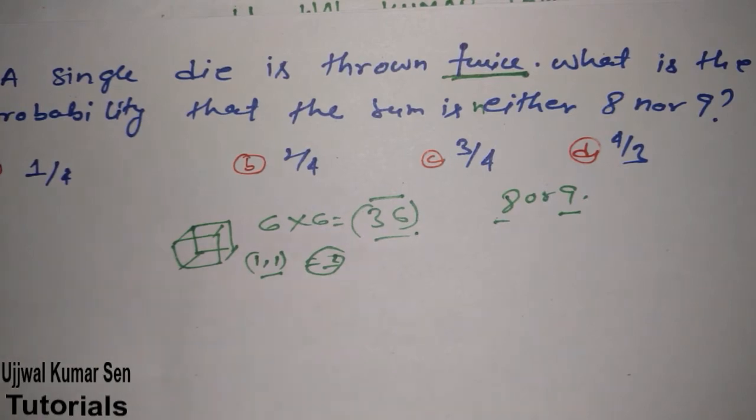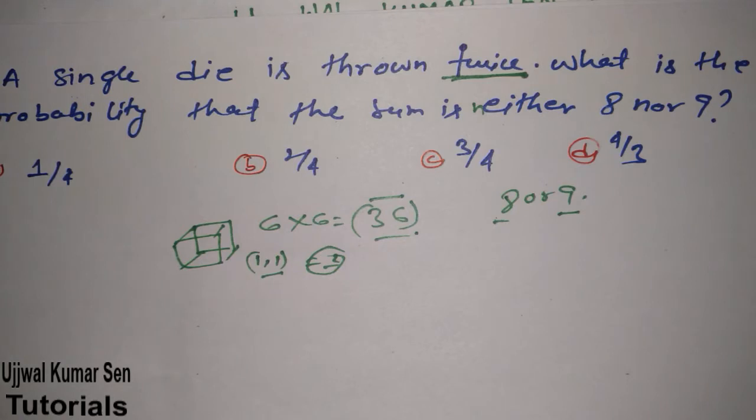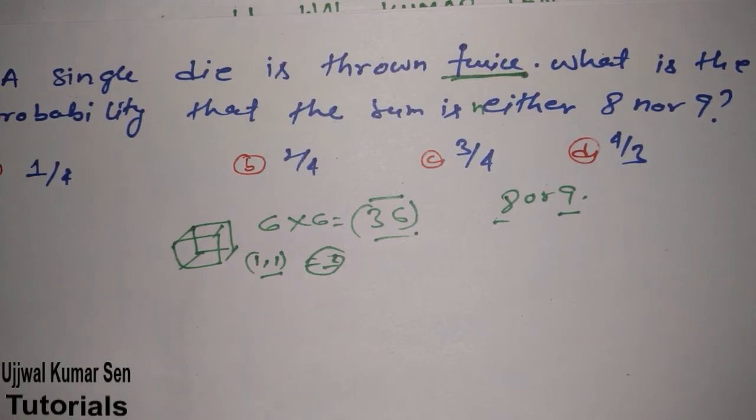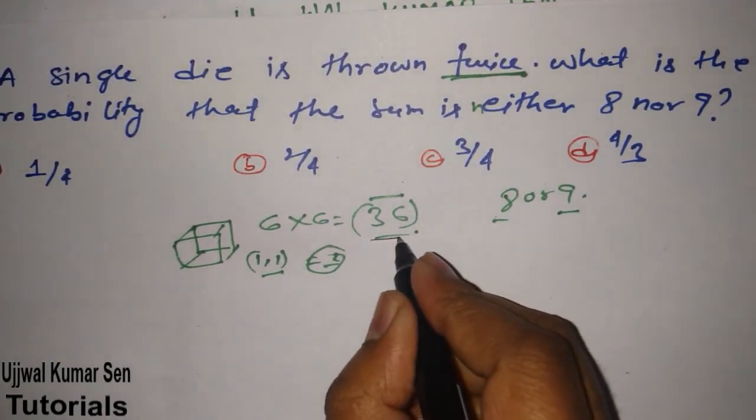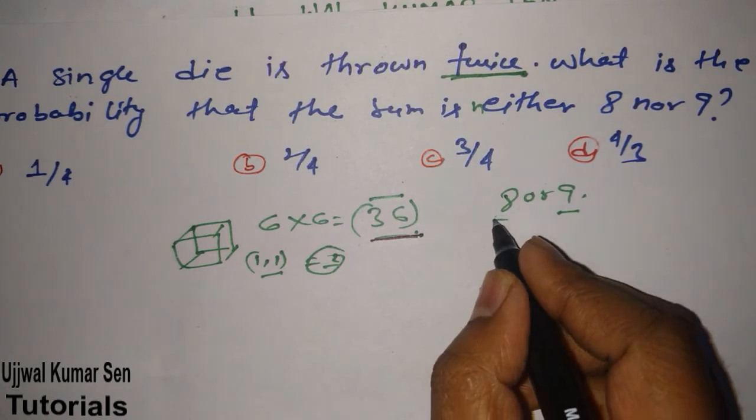So what we are going to exactly do? We will find out first the sum that is either 8 or 9. So what we have to do for this? We need to do a simple thing. First of all, we have to find out how many possibilities are there for the sum 8 or 9. Let's go for it. We'll find out the sample space. Total number of sample space is 36. Now, 8 or 9 - let's get started.